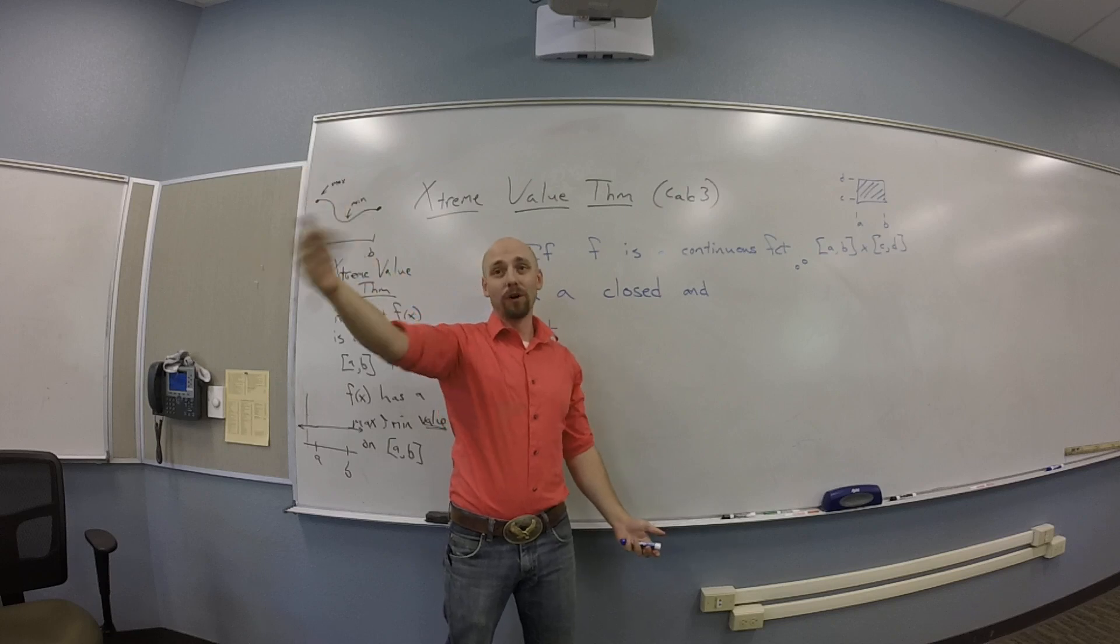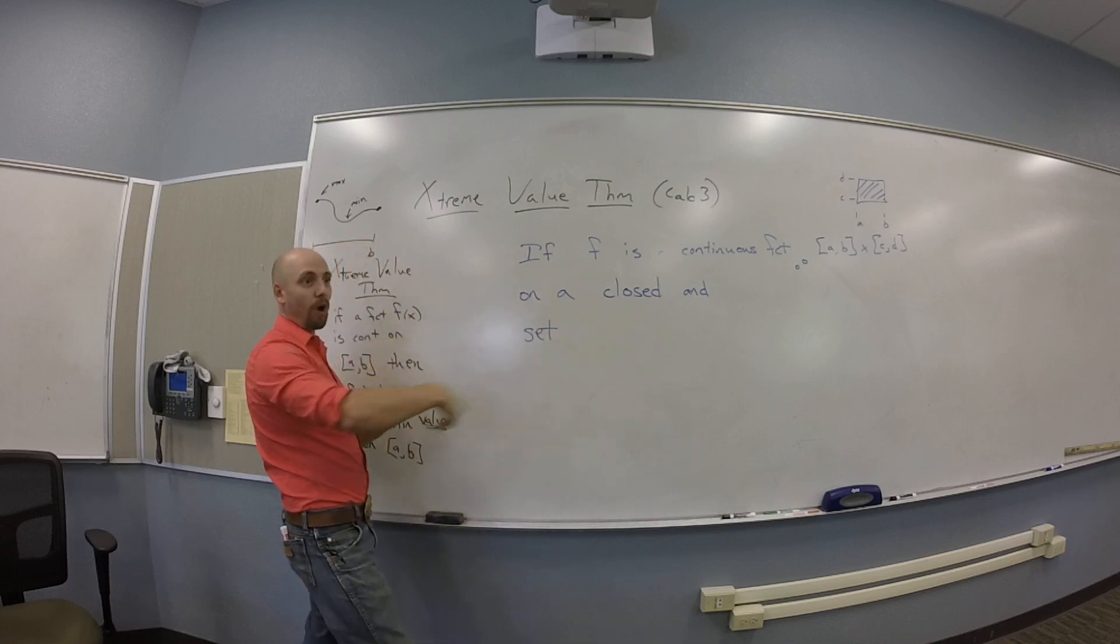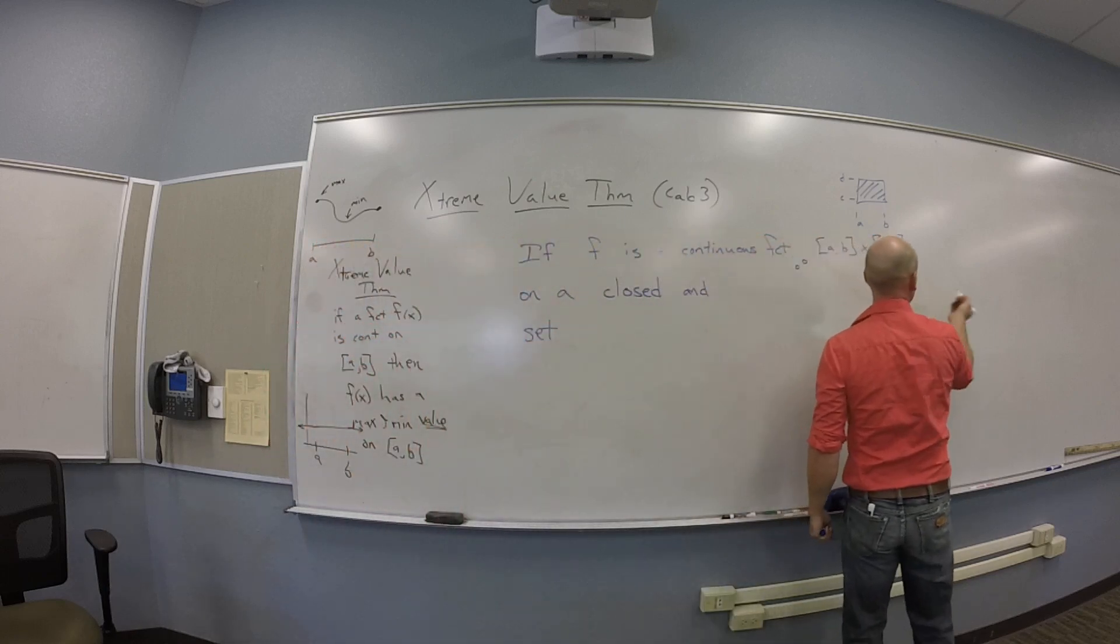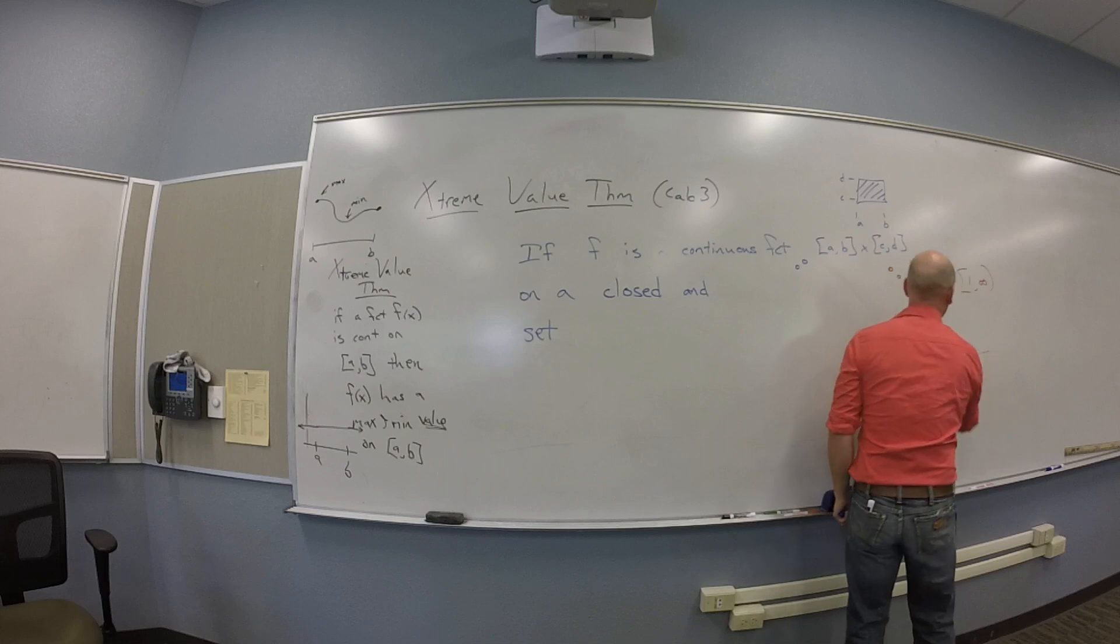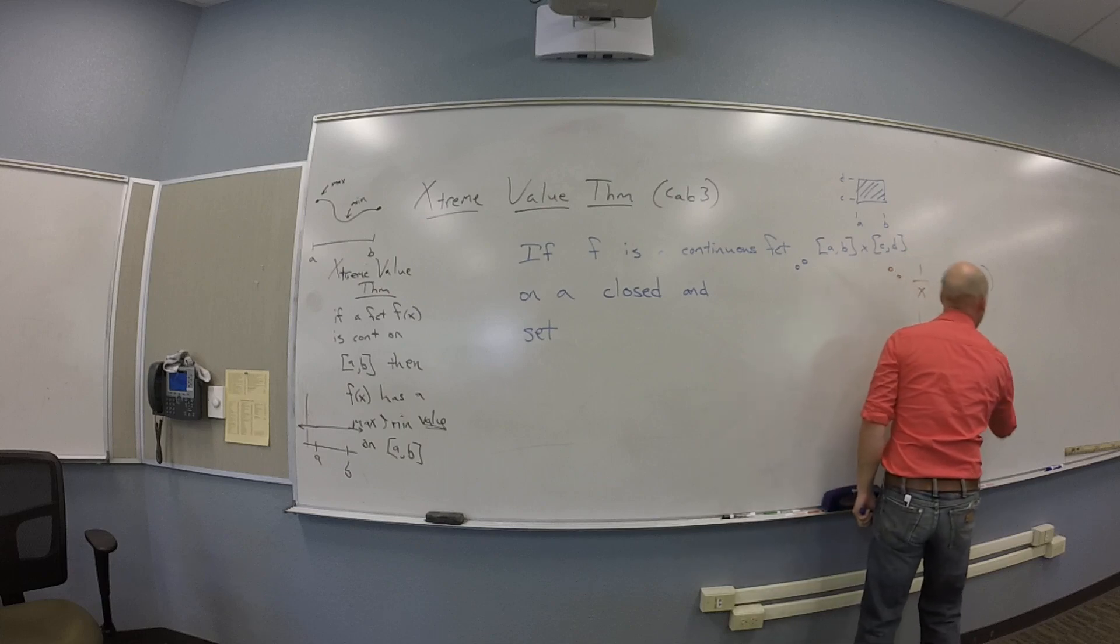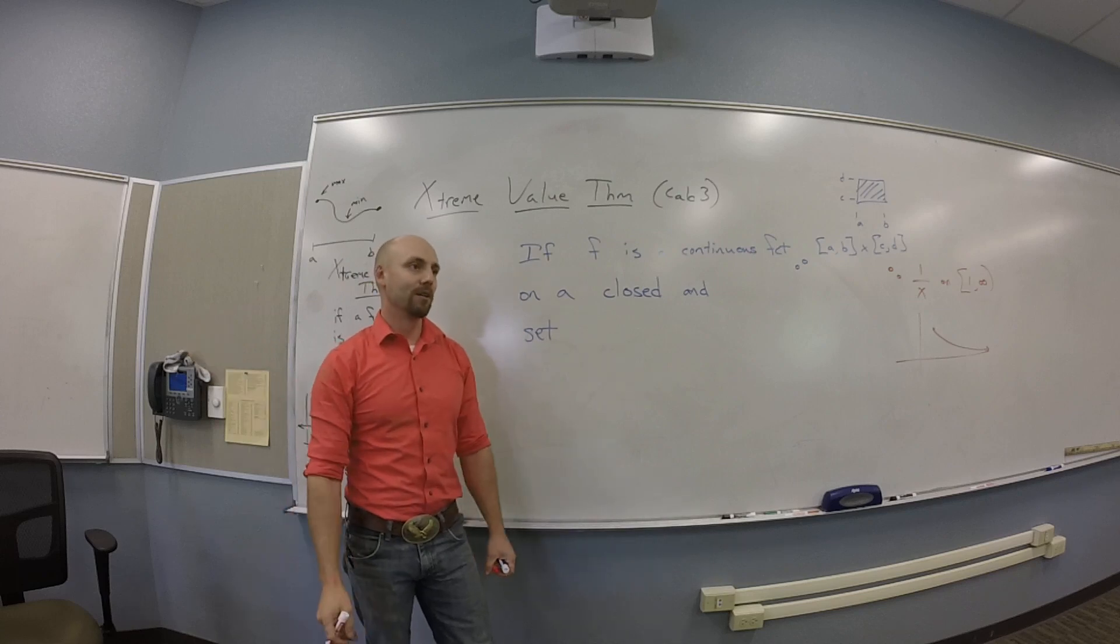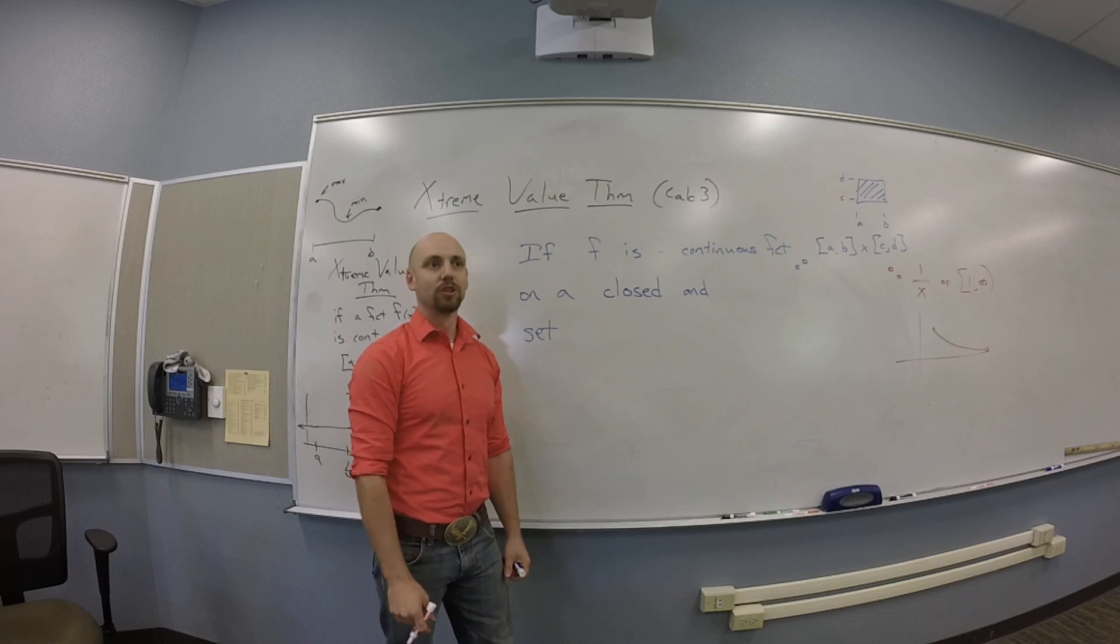If I had, like, 1 over x, on the closed interval from 1 to infinity. So you mean closed and non-infinite? Yeah. My issue is the thing I'm watching out for is 1 over x on the closed interval from 1 to infinity. If I had to draw a picture of this, it looks like this. Technically, it never reaches 0, so it doesn't have the minimum. It doesn't have a minimum value. It's got a maximum value, but it doesn't have a minimum value. Correct.